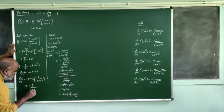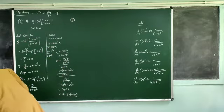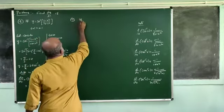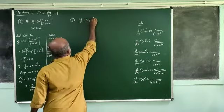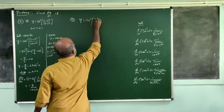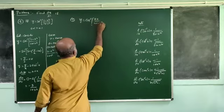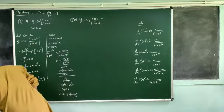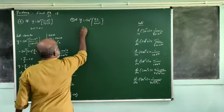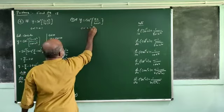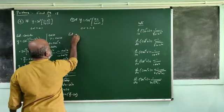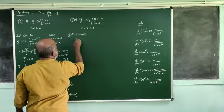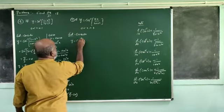Next, consider 1 plus x squared and 2 plus x squared. With the fundamental condition, 0 is fundamental. The domain condition is 0 less than x less than 1 for x squared. Consider y equal to the given expression.